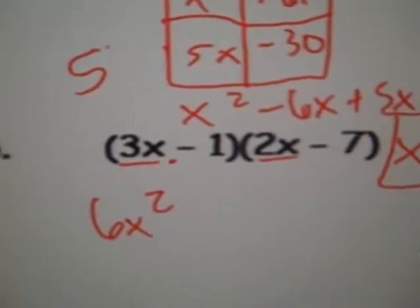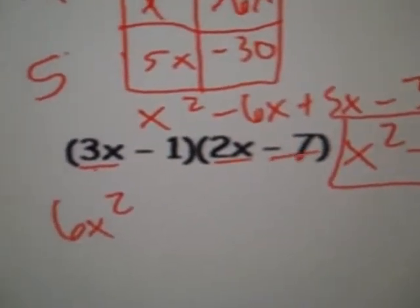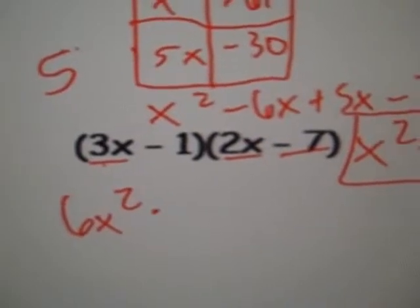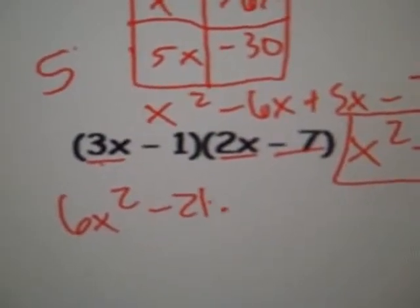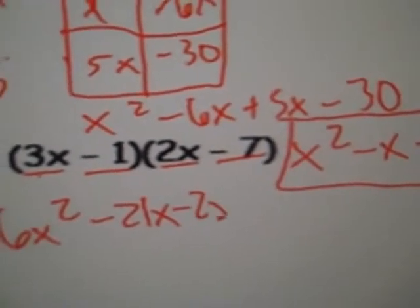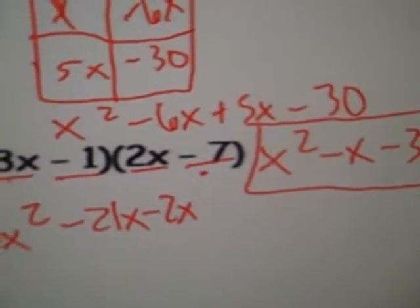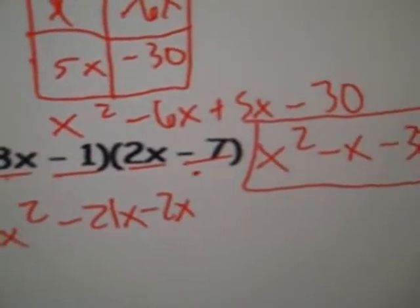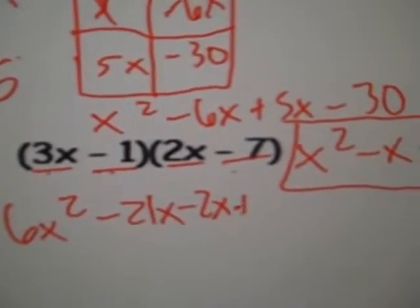Then I do outer, 3x and negative 7. Negative 7 times 3 is negative 21. And don't forget the x. Inner, negative 1 times 2x, negative 2x. And last, negative 7 times negative 1. Negative 7 times negative 1, positive 7.